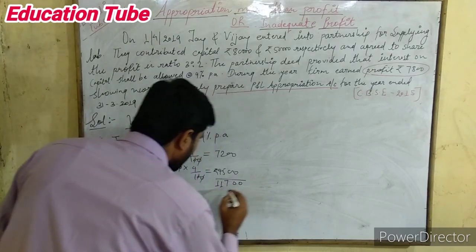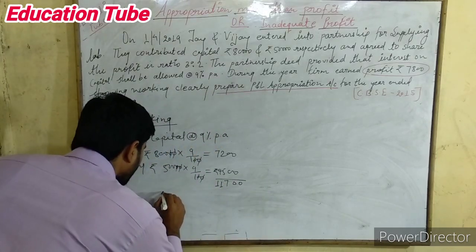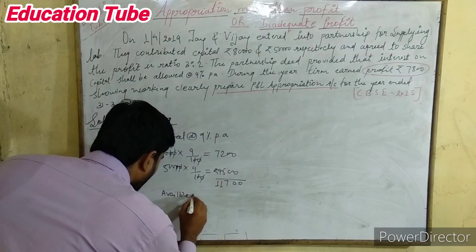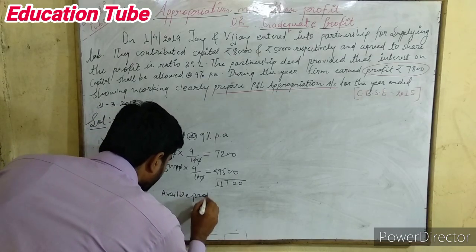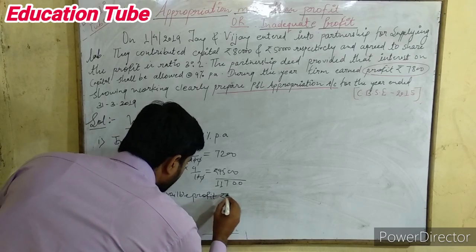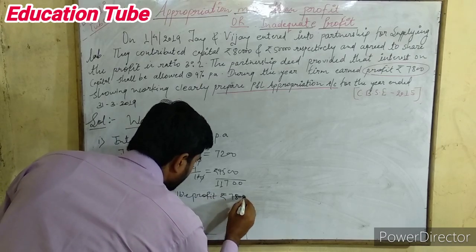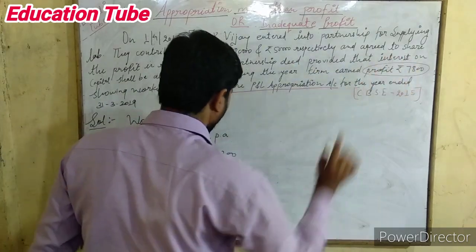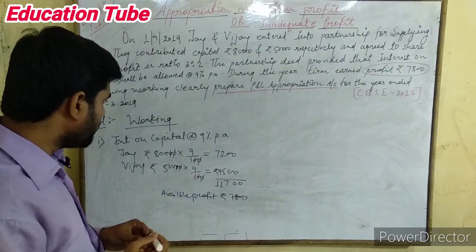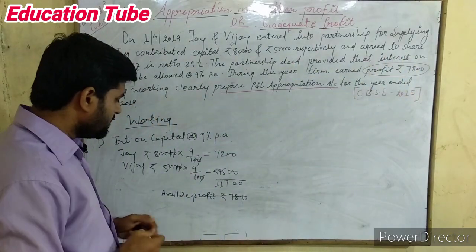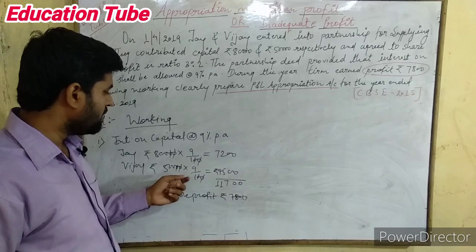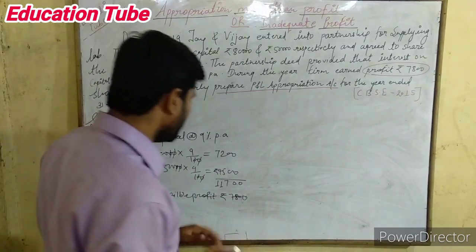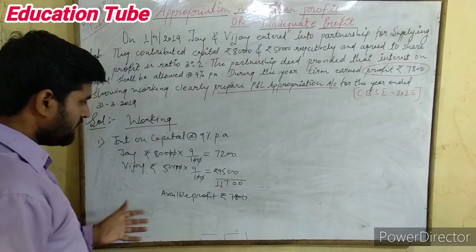Now we have the available profit. The available profit is only Rs. 7,800. From the working itself it is now clear: the available profit is less than the appropriation, or in other words, the appropriation is more than the available profit.